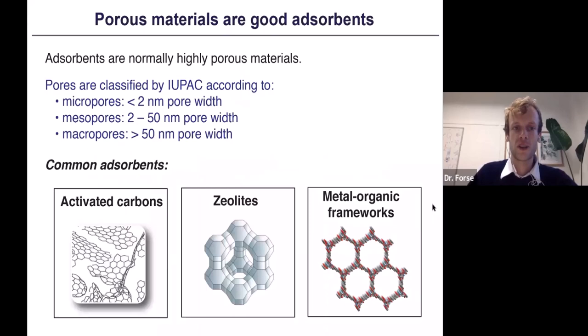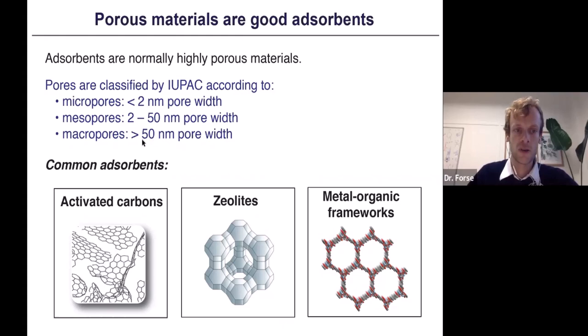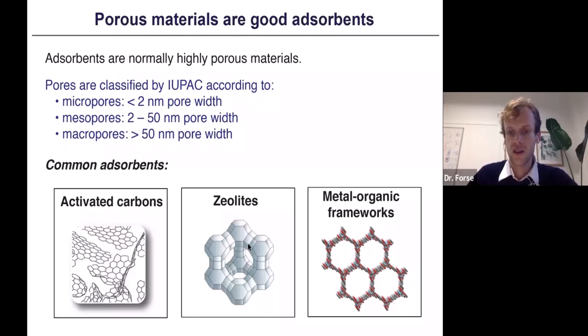There are different types of adsorbent materials. Normally these are highly porous materials where the pores are classified by IUPAC: micropores have width below two nanometers; mesopores are in the two to fifty nanometer range; and macropores are larger than fifty nanometers. The most common adsorbents are activated carbons — disordered porous carbon materials with graphitic-like local structures — zeolites, which are silicon and oxygen networks forming porous structures, and metal-organic frameworks (MOFs), where metal cations are bound together by organic anions such as aromatic molecules, assembled to make normally microporous adsorbent materials.